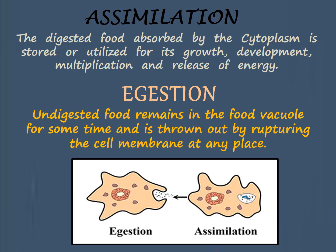After absorption, the next step is assimilation. The digested food absorbed by the cytoplasm is stored or utilized for its growth, development, multiplication, and release of energy. After assimilation, the last step is egestion. Undigested food remains in the food vacuole for some time and is thrown out by rupturing the cell membrane at any place. That's all about the nutrition in amoeba.